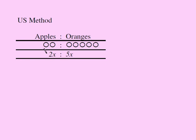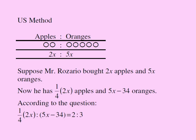Mr. Rosario bought the ratio of apples to oranges that he bought was 2 to 5. That means for every two apples he had five oranges. Based on that principle we can say for every 2x apples he bought he purchased 5x oranges. So we're going to conclude that Mr. Rosario bought 2x apples and 5x oranges.